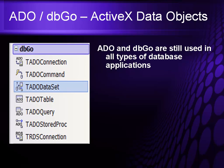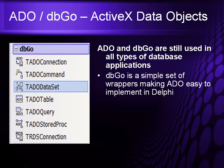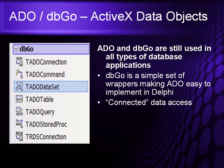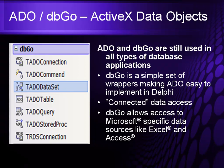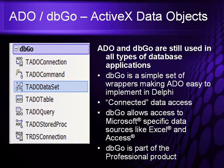ADO and DBGO — ActiveX Data Objects — are still used today for all types of databases and applications. DBGO is a simple set of wrappers making ADO easy to implement in Delphi. It is a connected data model, meaning you connect to the database, work while connected, and then disconnect. DBGO allows access to Microsoft-specific data sources like Excel and Microsoft Access. DBGO is part of the Professional Edition and above.